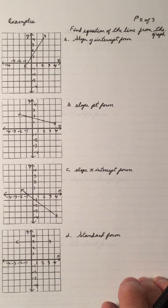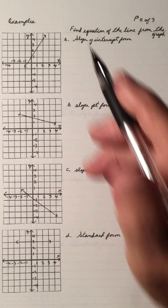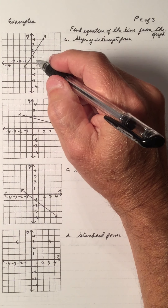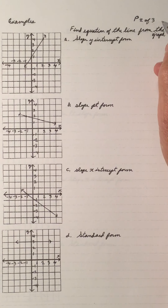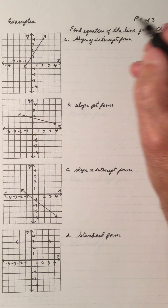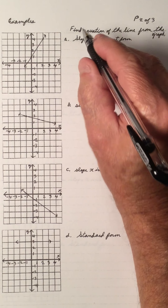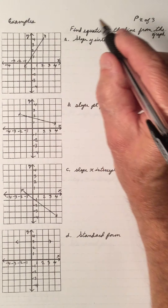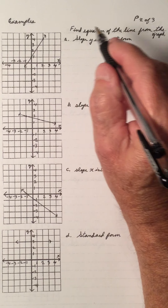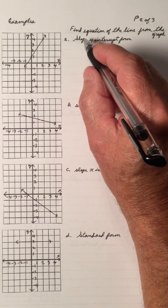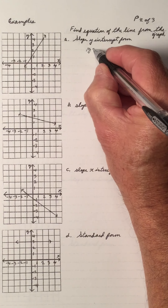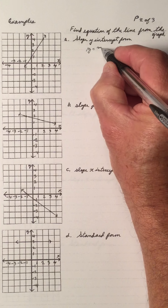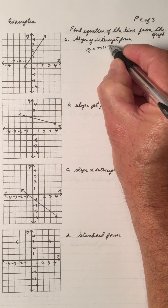What I'm going to do now is use the graph in front of me to find the slope by doing rise over run. We'll find the slope of a line and find the equation of a line in slope y-intercept form, so y equals mx plus b.